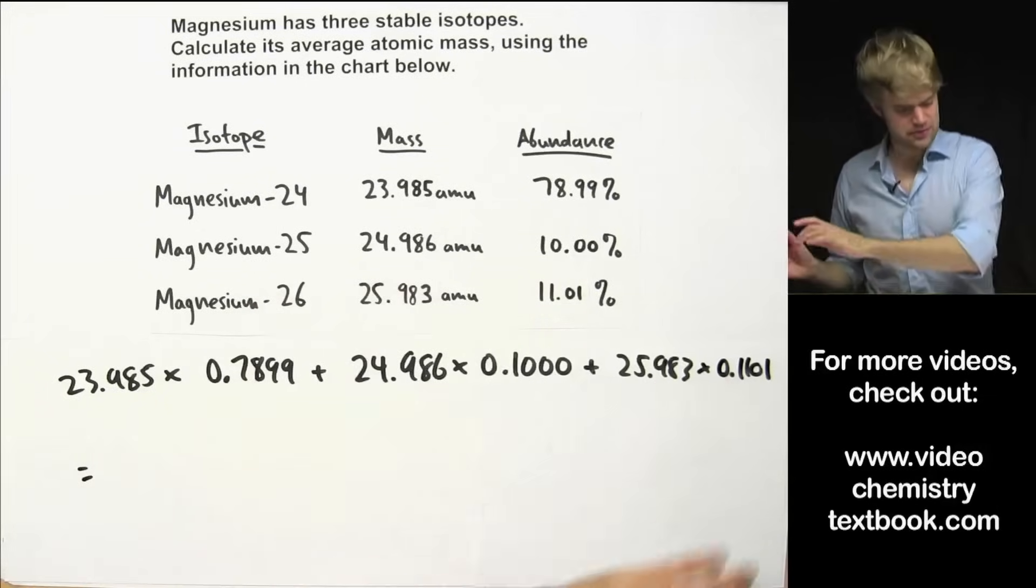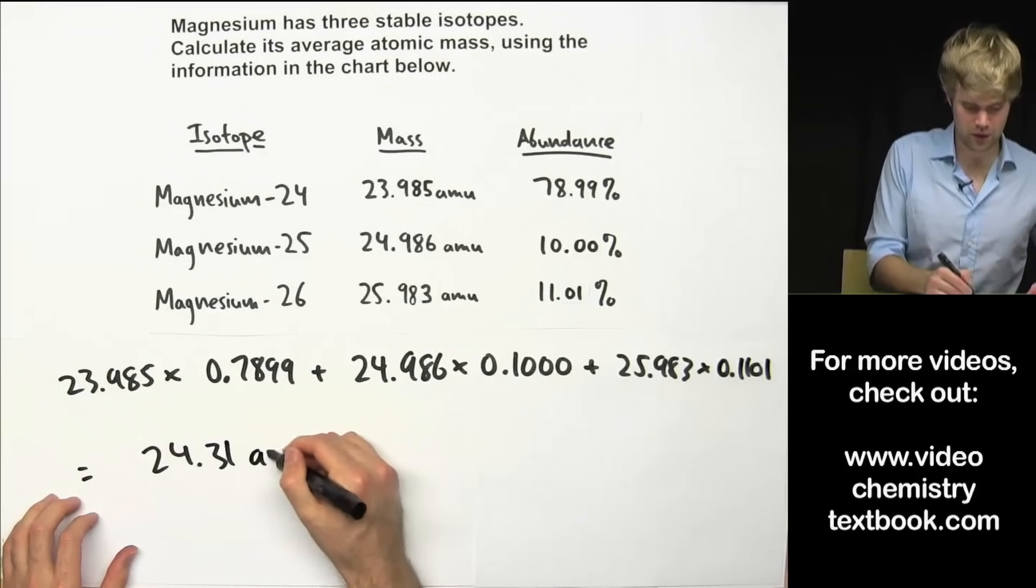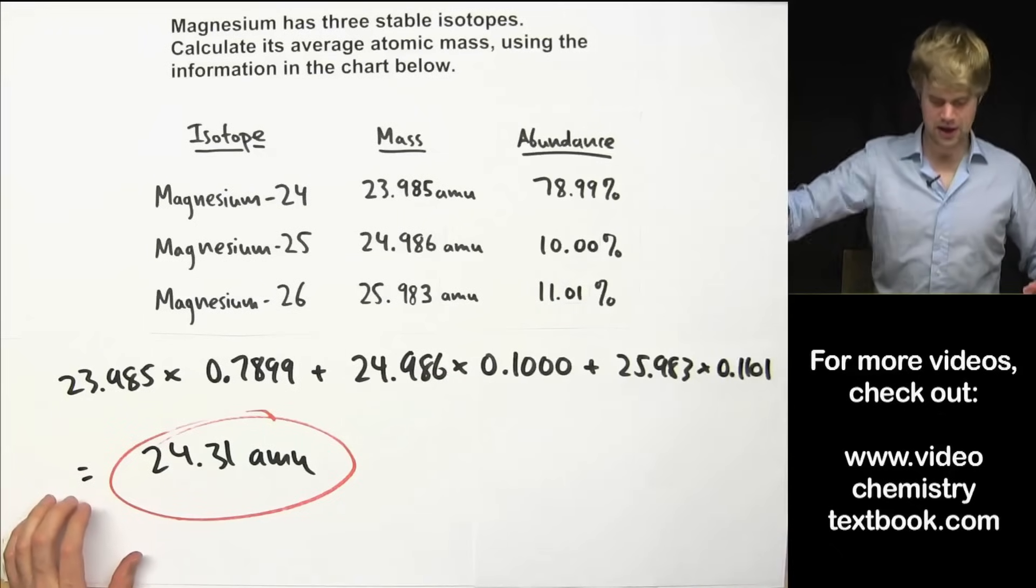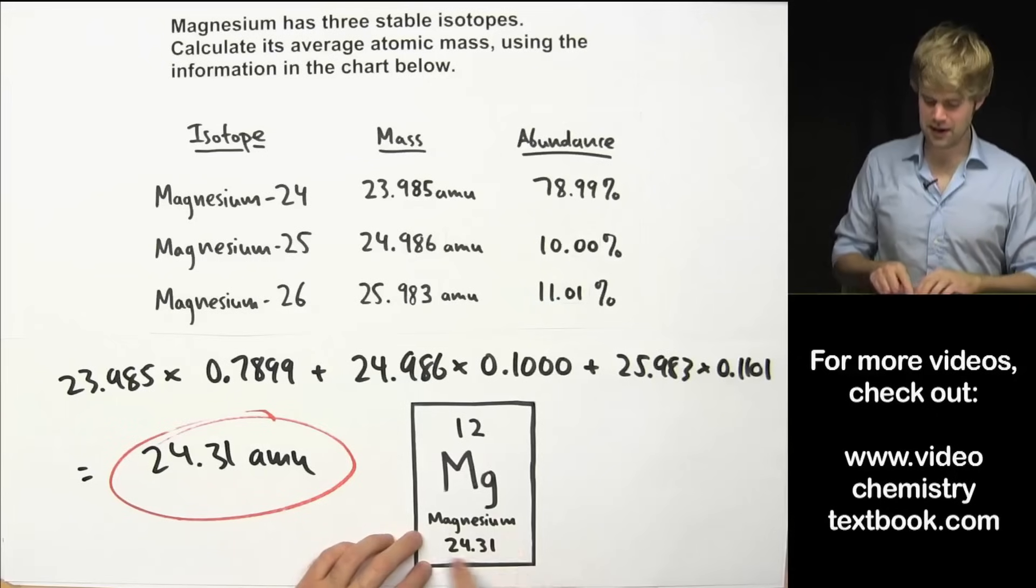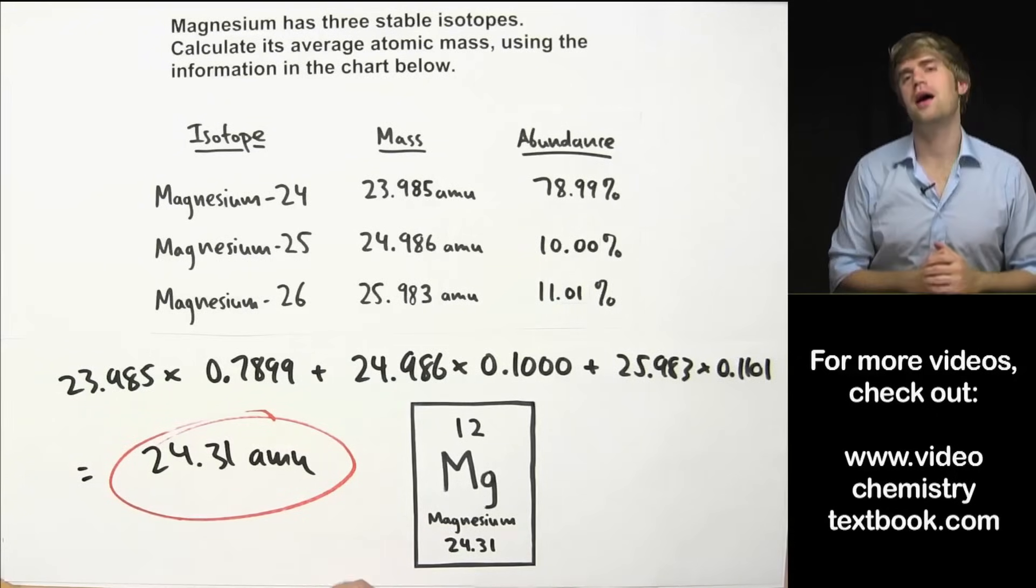So we're going to do this math and we're going to end up with 24.31 amu as the average atomic mass and you can check yourself by looking it up on the periodic table and you find that the reported atomic mass is the same as what we calculated here.